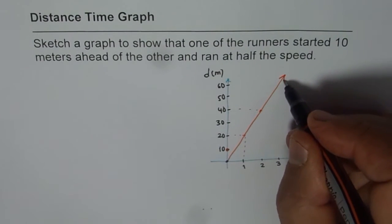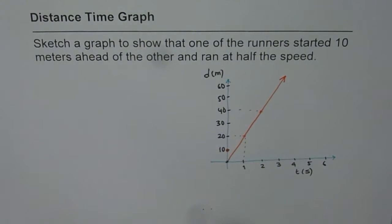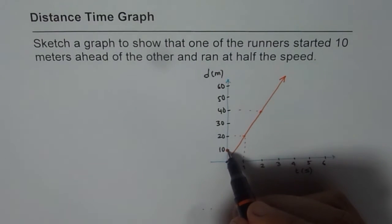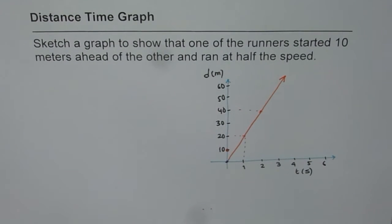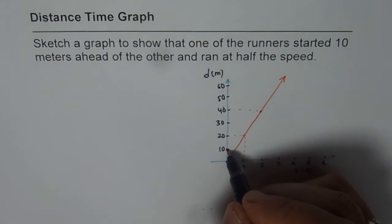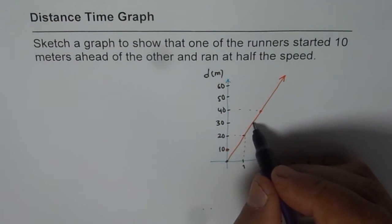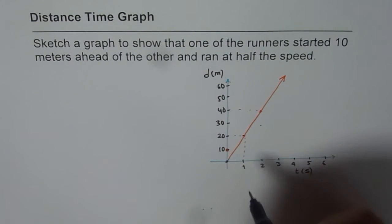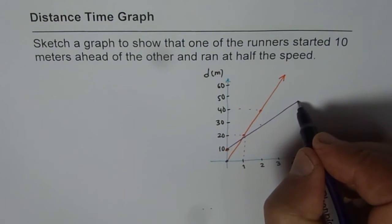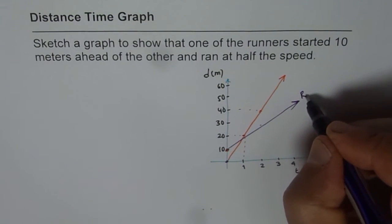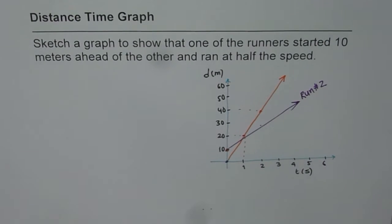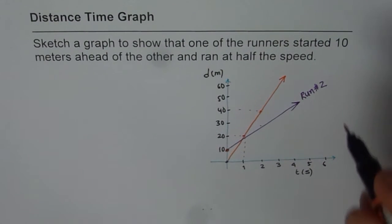Now the second runner is running at half the speed. Instead of covering 20 meters in one unit time, the second runner will take half the distance, that is 10. For the second runner it will be 10 per second, so it goes to 20, then the next second it will be at 30. That line will have half the slope. It is runner 2 who started with the lead of 10 meters.